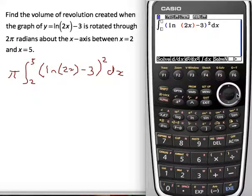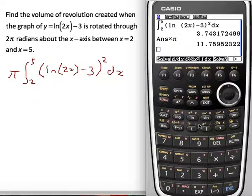And if I just click on, you want to know the lower value, 2, the upper value, 5. So I've just typed that in, 3.74, and at the end I'm going to times it by pi to get 11.8.